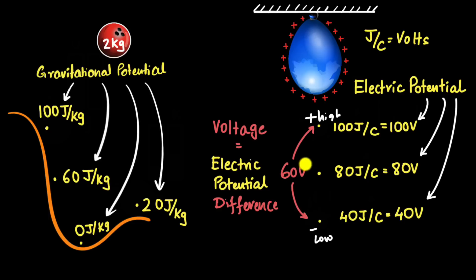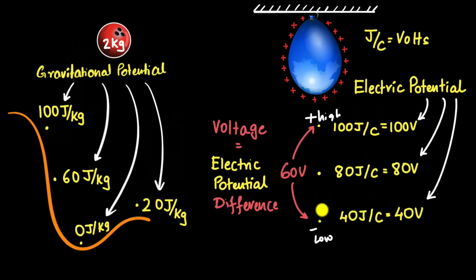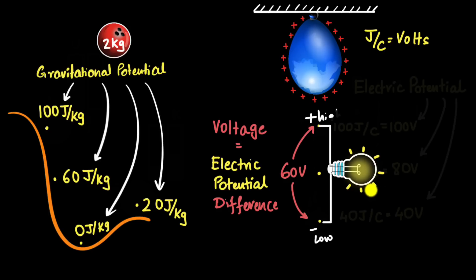Now that we've defined voltage, our first question should be: why should we care? Every coulomb going from here to here loses 60 joules of energy — but what can I do with that practically? Where does that energy go? In circuits and real wires, charges bump into atoms and their kinetic energy converts into heat. That means 60 joules converts to heat, giving us a method to calculate how much heat energy is generated — for example, in a light bulb.